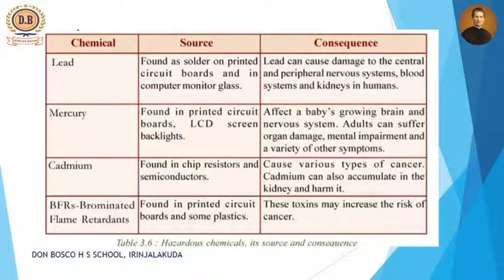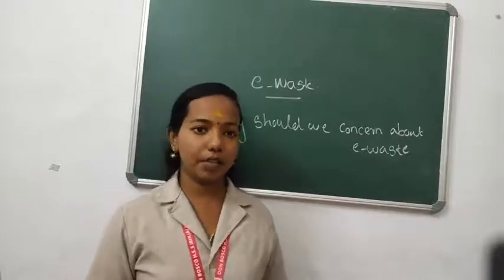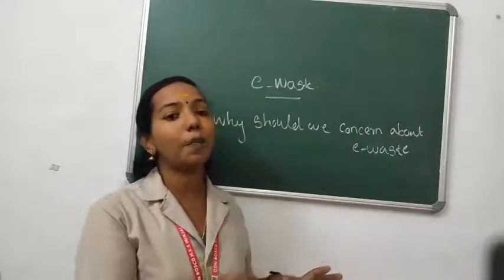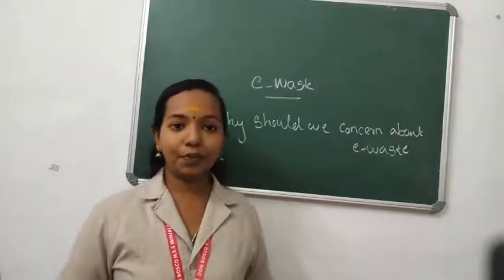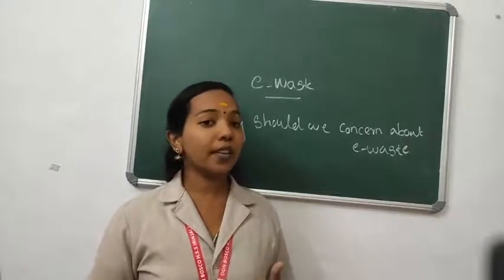Next is BFRs — brominated flame retardants. This is a very toxic material. It is found in printed circuit boards and some other plastics. These toxins may increase the risk of cancer. So the different toxic materials are lead, cadmium, mercury, and brominated flame retardants. In all these sources, PCB — printed circuit board — is common. Without PCB, we can't have a computer system. When it is in use, nothing will happen, but if it becomes e-waste and we dump these products into a particular place, it will definitely affect human life.